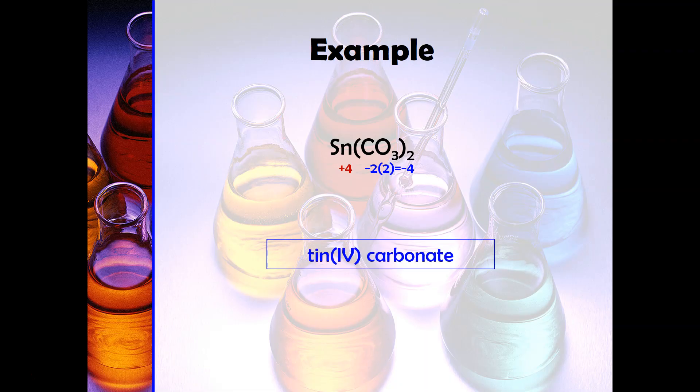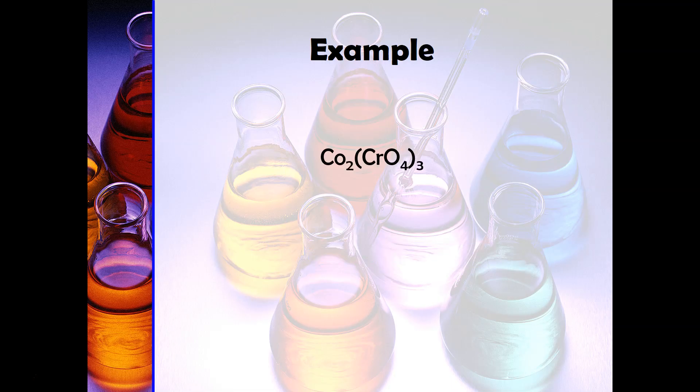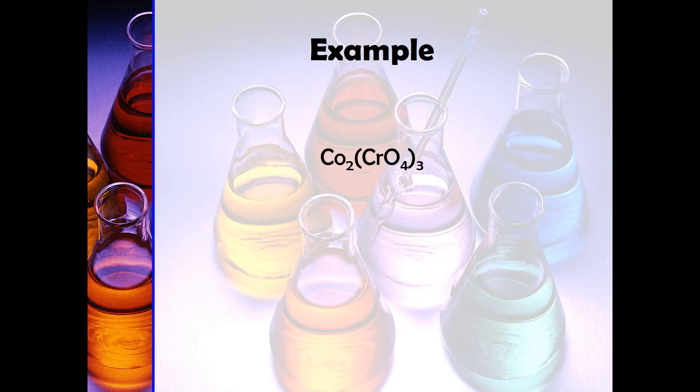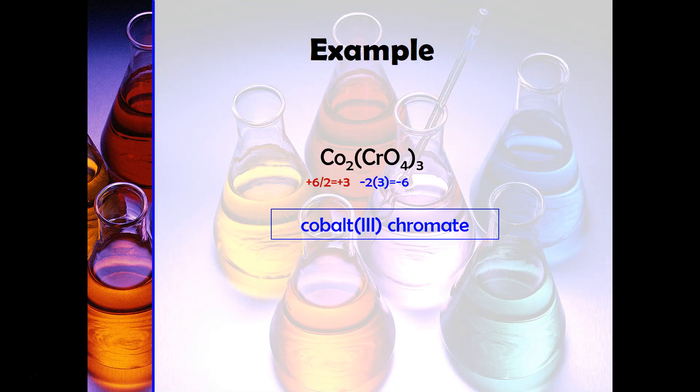Here's another one. Cobalt is another one that when you look on the periodic table has more than one possible charge - it could be 2+ or 3+. To figure out which one we're going to look at the chromate. We have -2 times 3 which gives you -6. If this is -6, that means this side has to be +6. Divide that by 2, that means each cobalt has to be +3, and so therefore it'll be cobalt(III) chromate.